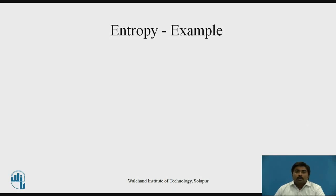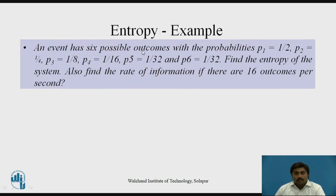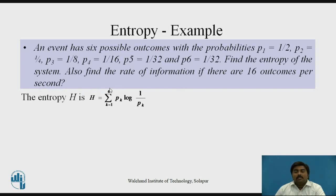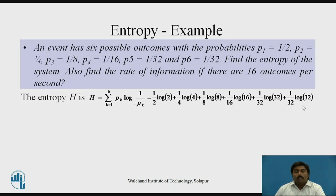Now let's take one more example. An event has 6 possible outcomes with probabilities P1=1/2, P2=1/4, P3=1/8, P4=1/16, P5=1/32, and P6=1/32. We need to find the entropy of the system using H = summation from k=1 to 6 of P·log(1/P). Substituting: (1/2)·log(2) + (1/4)·log(4) + ... up to P6. The entropy is 31/16 bits per message.